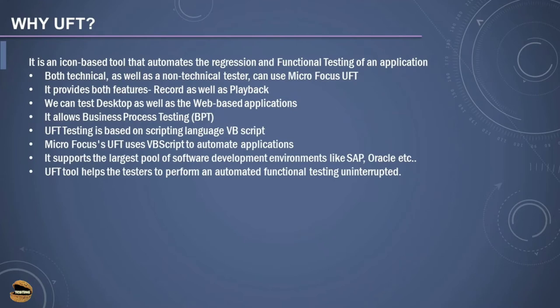It is important to understand why you should use a particular tool and what are the salient features of UFT that make it different from other automation testing tools. It is an icon-based tool that automates the regression and functional testing of an application, which means it has a well-designed UI and becomes more user-friendly compared to other open source software. People can get started with this tool soon after installing it — you don't really need a deep understanding of programming initially. You can make use of the many toolbar options to get started and start recording and replaying scripts.